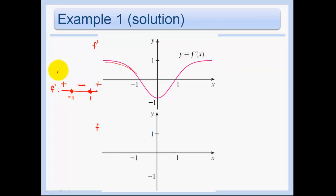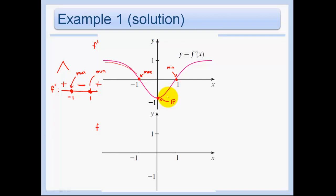Since our derivative went from positive to negative, we have a max at negative 1. And we have a min at x equals 1. We also know f prime prime equals 0 somewhere, meaning we have an inflection point. At negative 1 we have a max, at x equals 1 we have a min. They told us f of 0 equals 0, so we know the point (0, 0).